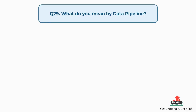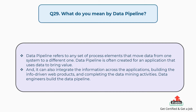Question number twenty-nine: What do you mean by data pipeline? A data pipeline refers to any set of process elements that move data from one system to a different one. Data pipelines are often created for applications that use data to bring value, and can also integrate information across applications, build info-driven web products, and complete data mining activities. Data engineers build the data pipeline.